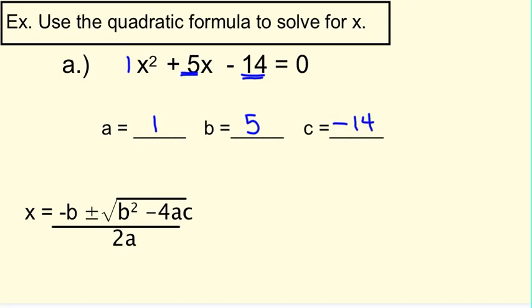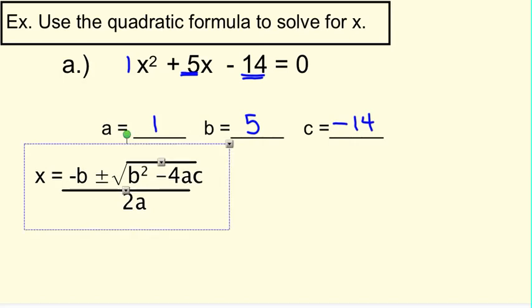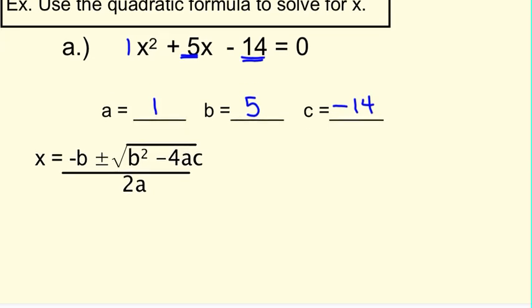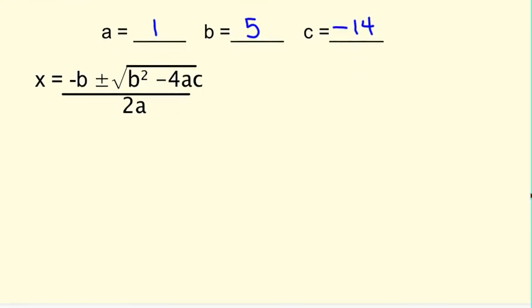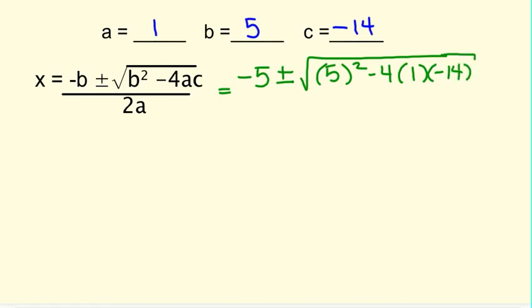Now we're going to go ahead and plug it into the quadratic formula. So I have listed the quadratic formula here. But on testing quizzes, we will not give you the quadratic formula. You must know what it is. So we're going to substitute in negative b plus or minus the square root of b squared minus 4ac all over, make sure it's all over, 2a.